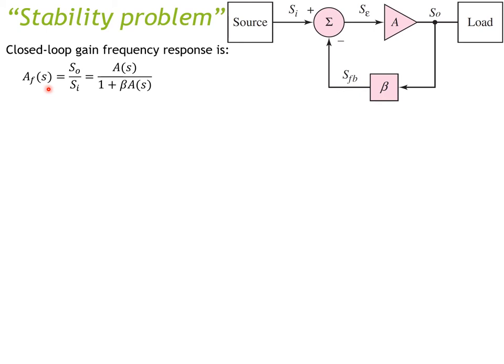A_f is the closed-loop gain, s stands for jω, where ω is the frequency component. You can replace ω with 2πf. The closed-loop gain is basically open-loop gain A divided by (1 + βA), and βA is the loop gain, which can be represented as T.